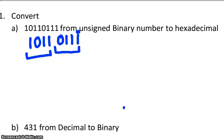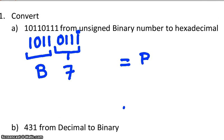For the first group right here, 0, 1, 1, 1 in hexadecimal is 7. And 1, 0, 1, 1 in hexadecimal is B. So 10110111 in binary is equal to B7 in base 16.